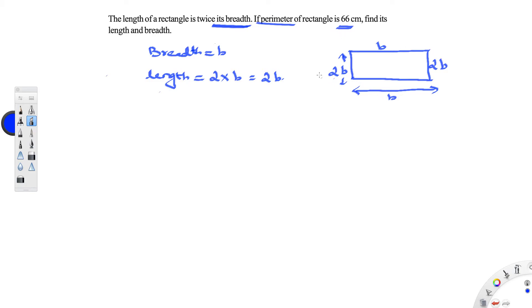Perimeter is nothing but boundary of the rectangle, boundary of a shape. Right. So now what is the perimeter of a rectangle formula? Perimeter formula is 2 into L plus b.